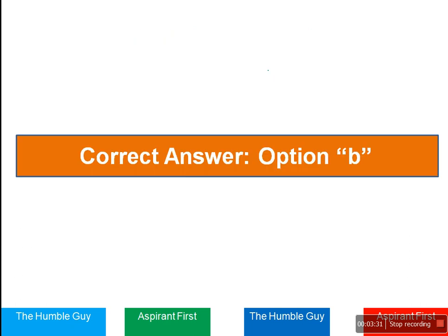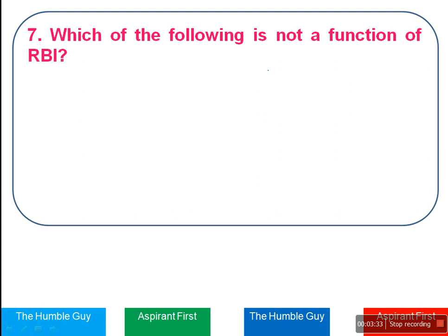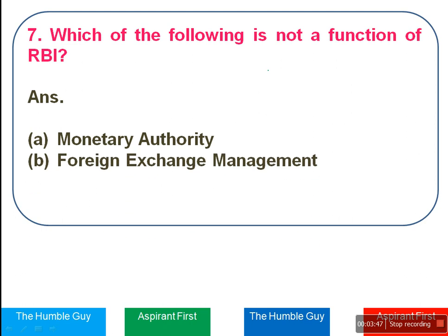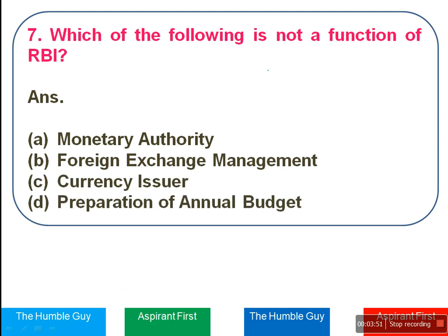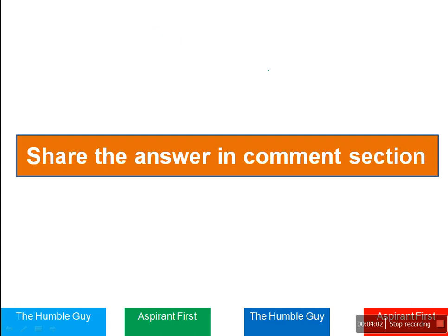Which of the following is NOT a function of RBI? The options are: monetary authority, foreign exchange management, currency issuer, or preparation of annual budget. We will not give the answer directly — share your answer in the comment section. Option A, B, C, or D?